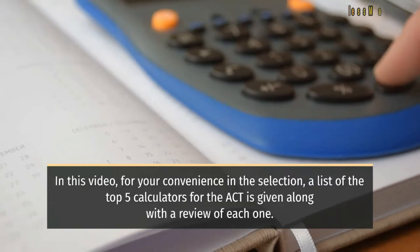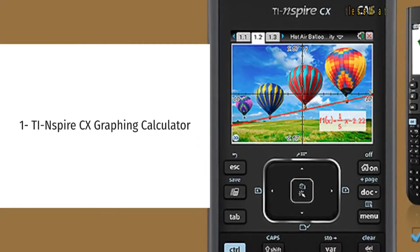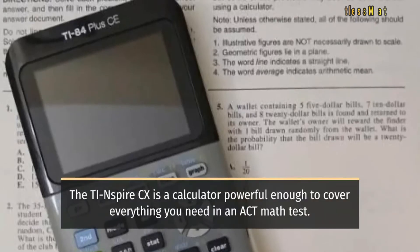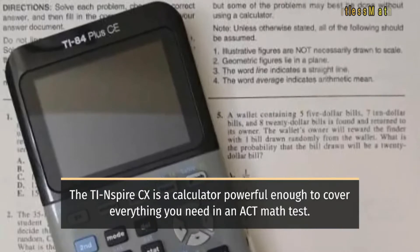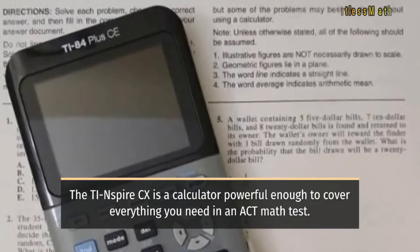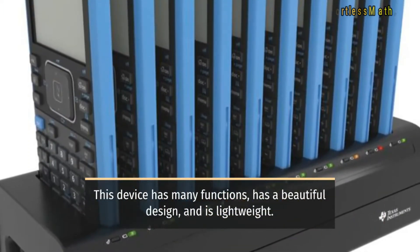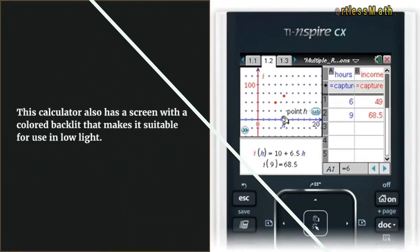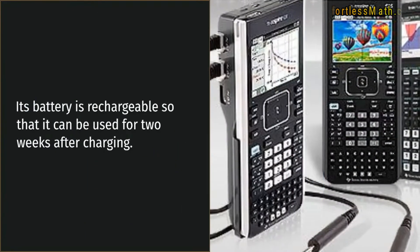One: TI Inspire CX graphing calculator. The TI Inspire CX is a calculator powerful enough to cover everything you need in an ACT math test. This device has many functions, has a beautiful design, and is lightweight. This calculator also has a screen with a colored backlit that makes it suitable for use in low light. Its battery is rechargeable so that it can be used for two weeks after charging.